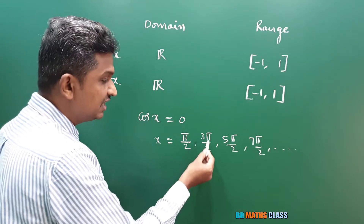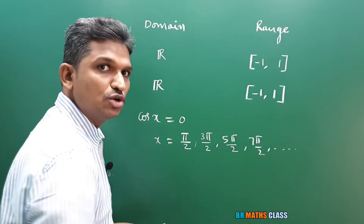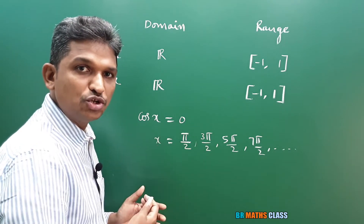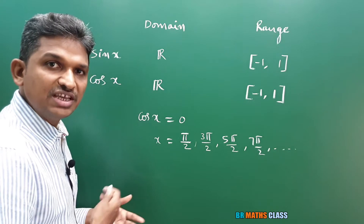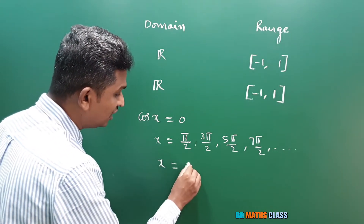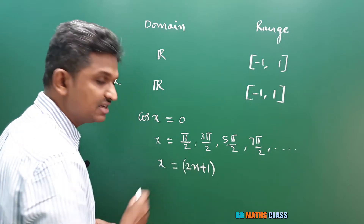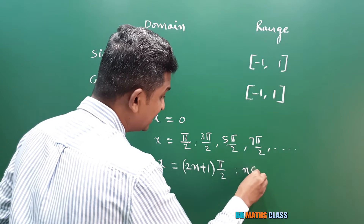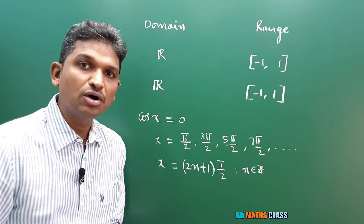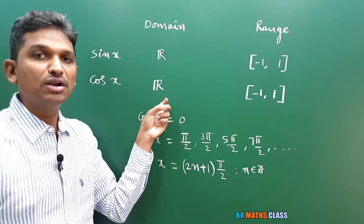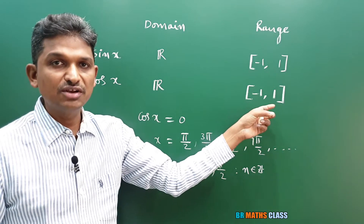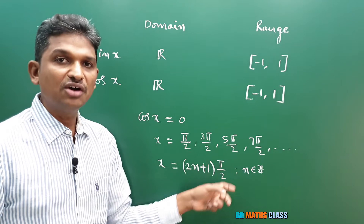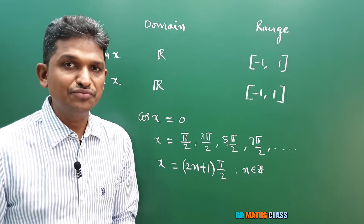So what pattern do we see? 1×(π/2), 3×(π/2), 5×(π/2), 7×(π/2) — these are odd multiples of π/2. When x is an odd multiple of π/2, cos x is 0. In general, we write this as (2n+1)×(π/2) where n is an integer. So domain of cos x is all real numbers, range is [−1, 1], and when cos x is 0, x = (2n+1)π/2. These things we use frequently.